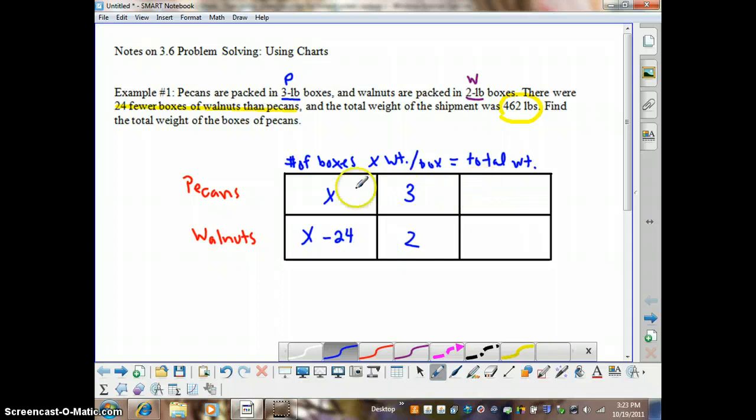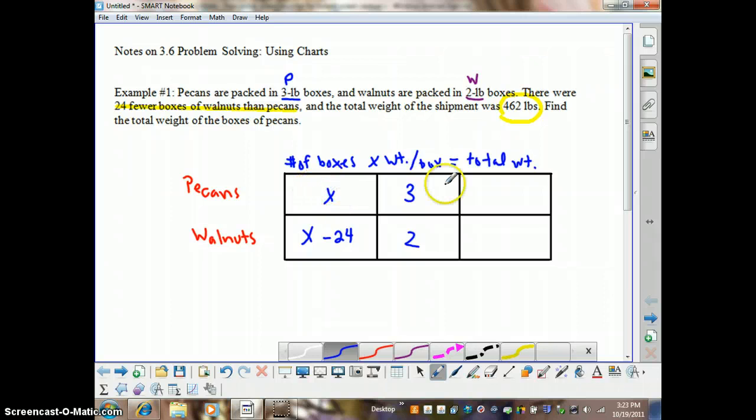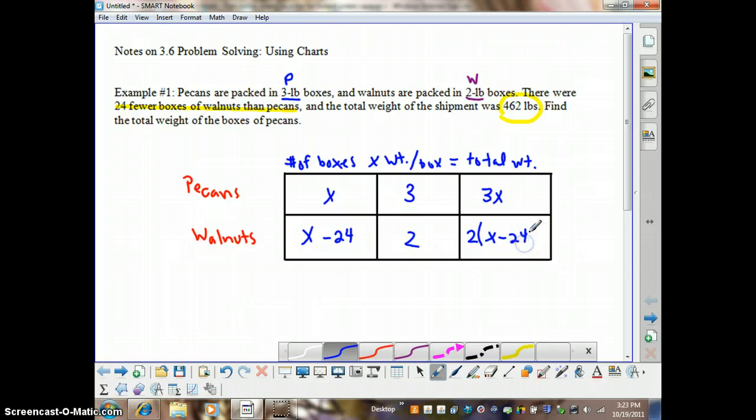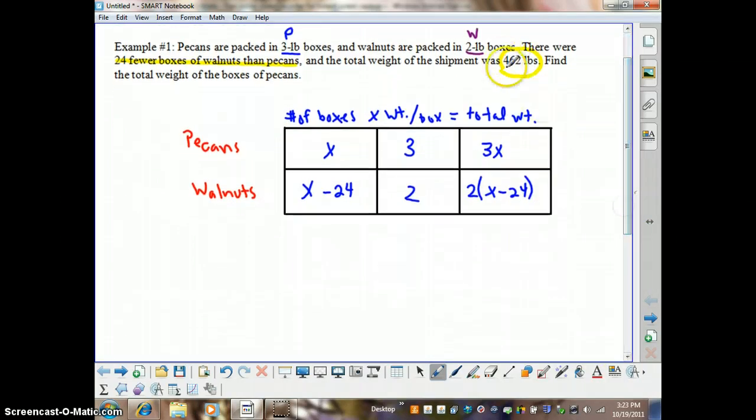So to get the total weight, let's say we had 10 boxes of pecans. We know that it would weigh 30 pounds because 10 times 3 would give us 30. But we don't know that this is 10, so we're just going to do 3 times x or 3x. And the same thing here. If we knew exactly how many boxes there were here, we'd take this times 2 pounds per box to get the total weight. But we don't know the number of boxes. So we're just going to write the weight per box times the number of boxes.